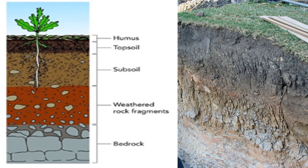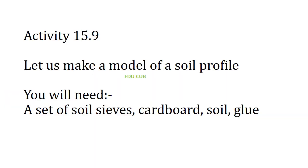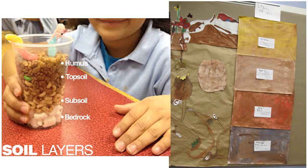Here you can see the soil profile diagram. You have to make a model of a soil profile. You will need a set of soil sieves, cardboard, soil, and glue. Dig a hole 30 centimeters deep in your home garden, collect a soil sample, and separate the soil sample using a set of sieves.